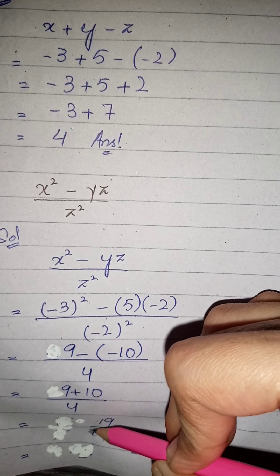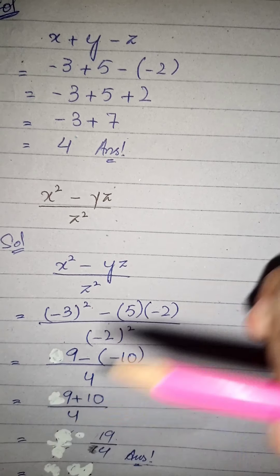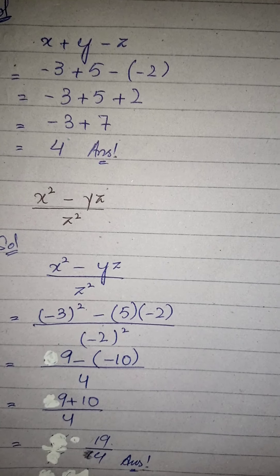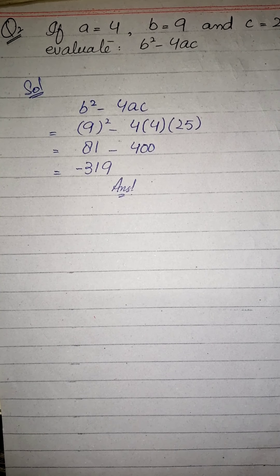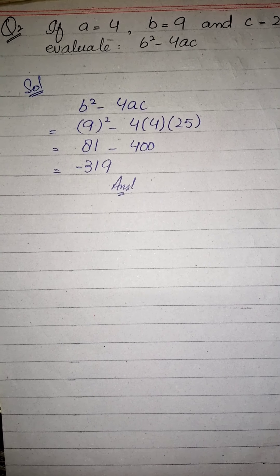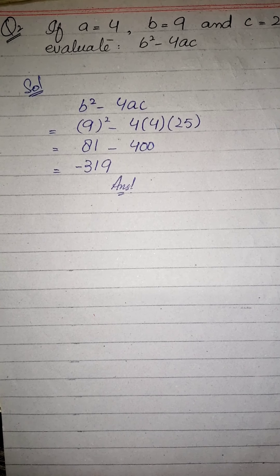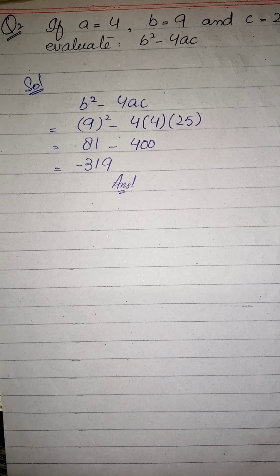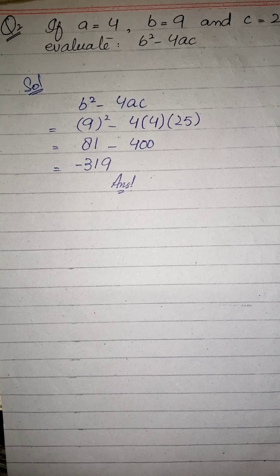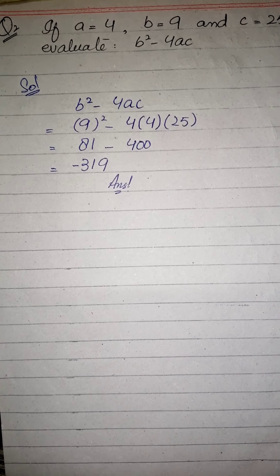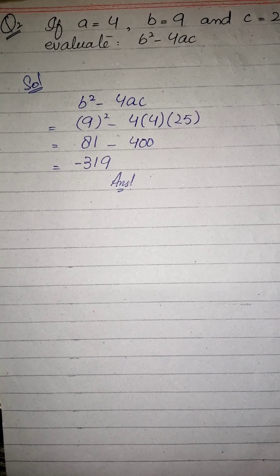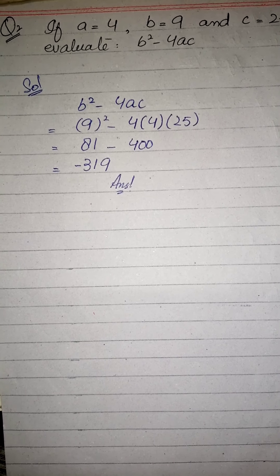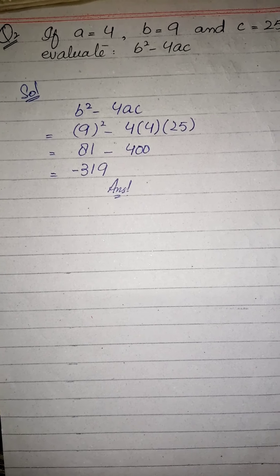ہمارا answer ہے 19 upon 4۔ یہ 14 نہیں ہے، یہ 4 ہے۔ Question number 1 کا second part آپ کا homework ہے۔ Part 1 اور part 3 میں نے کروا دیا اور part 2 آپ کا homework ہے۔